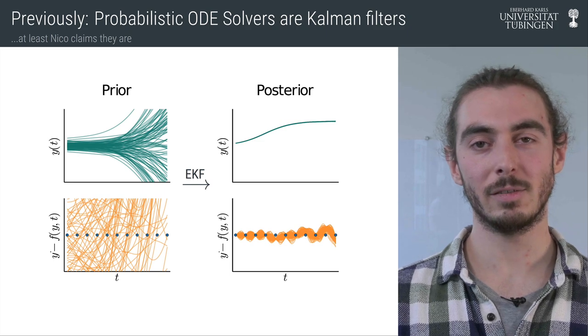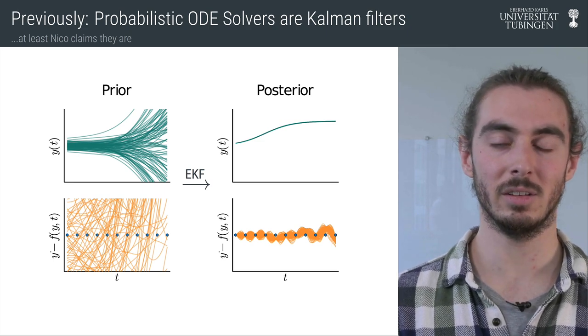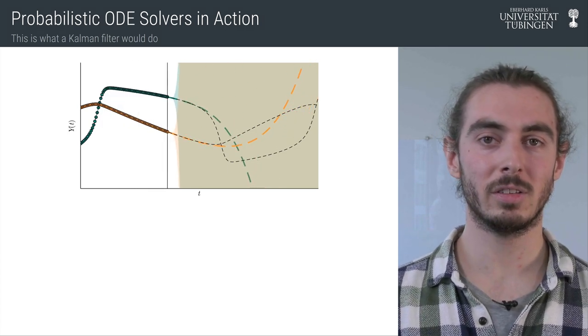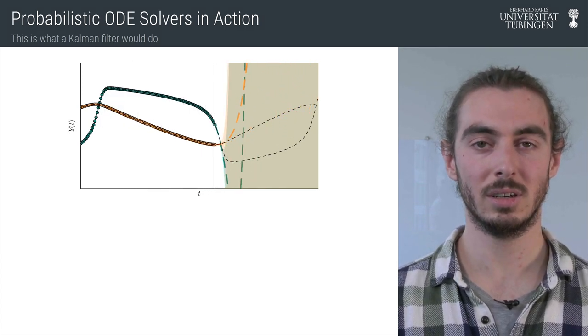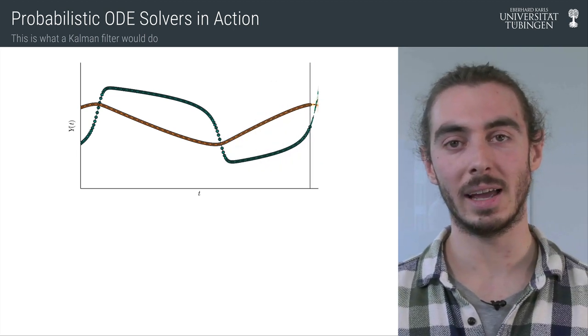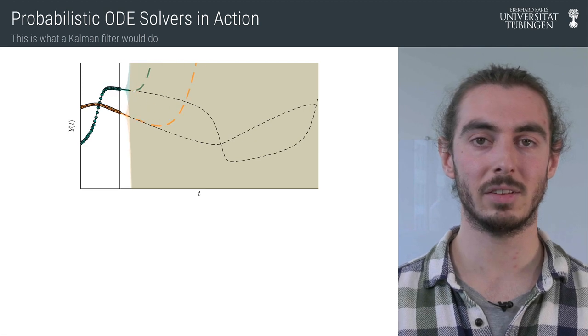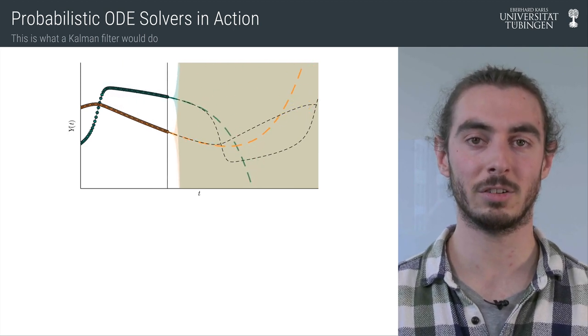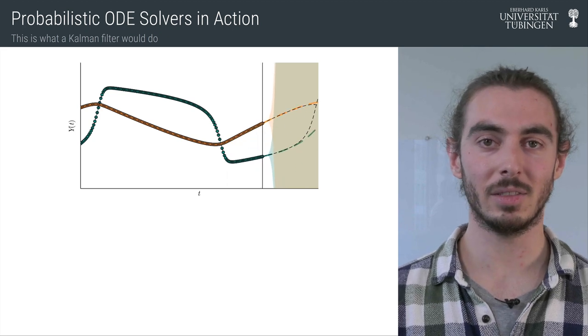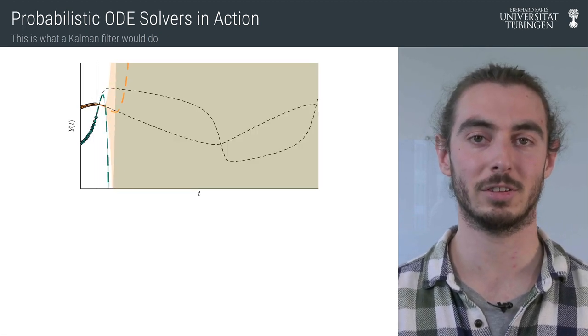But let's have a look at what happens inside this probabilistic ODE solver. This animation shows such a solver starting on the left at the initial time point, iteratively extrapolating and adjusting this extrapolation to satisfy the ODE. We can see that the solver is able to find the correct solution trajectory.